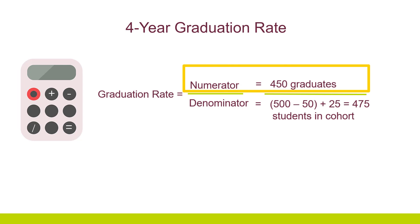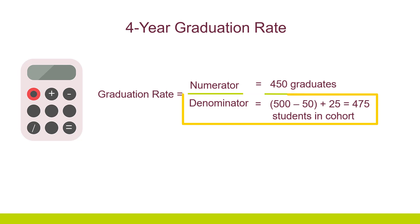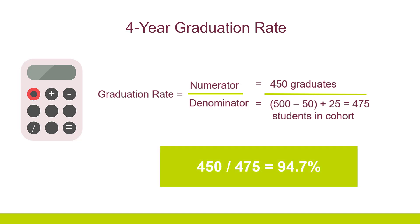The numerator is equal to 450 graduates. The denominator starts with the initial cohort of 500, subtracts 50 students who transferred out of the school, and adds 25 students who enrolled in the school, which is 475 students. So the graduation rate for this school would be 450 divided by 475, which would equal 94.7 percent.